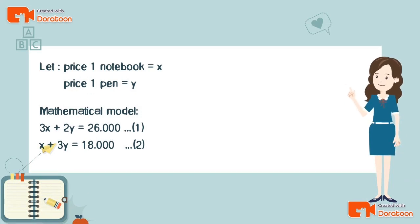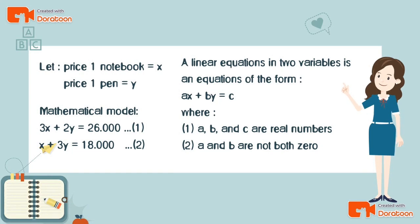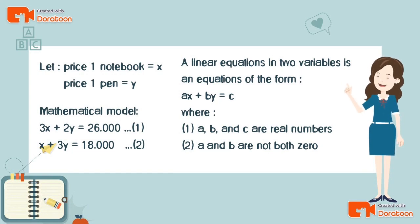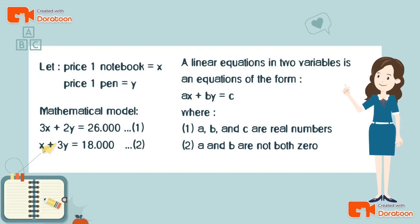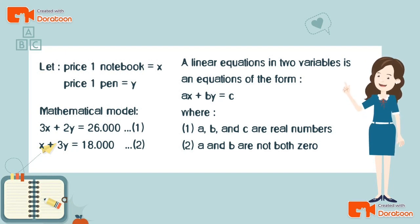A linear equation in two variables is an equation of the form ax + by = c, where a is the coefficient of x, b is the coefficient of y, and c is a constant. The real numbers a and b are not both zero.